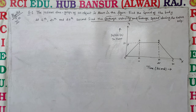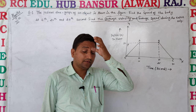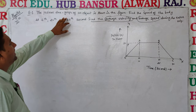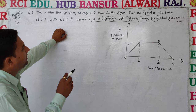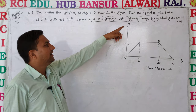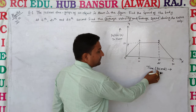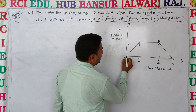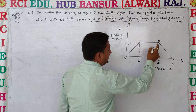Welcome to RCI online classes. Dear students, let's continue Chapter 3. Our next topic is numerical. The position-time graph of an object is shown in the figure. Find the speed of the body at the 5th, 20th, and 27th second. The graph has time in seconds on the x-axis and position x in meters on the y-axis. The body starts from point O, reaches point A, then moves from A to B.